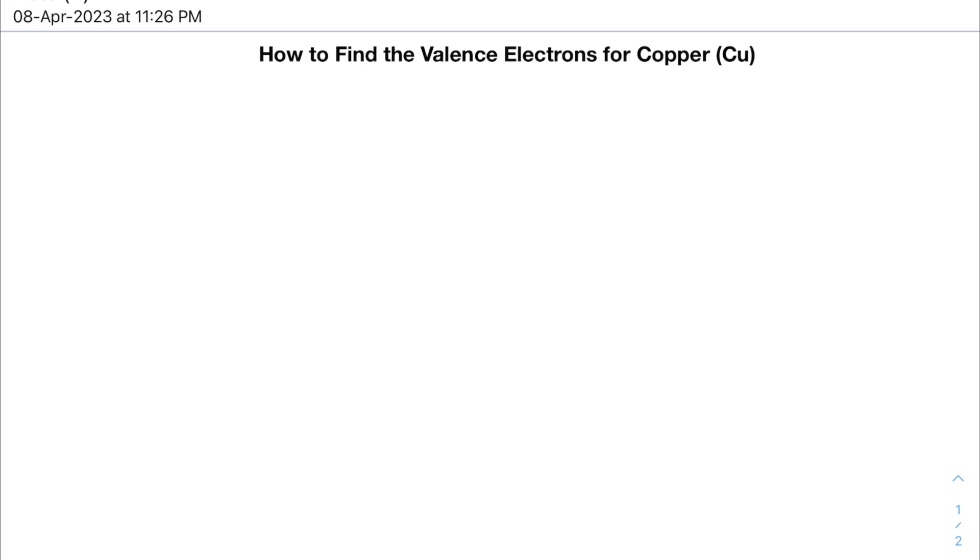Hello everyone, so in this video we are going to find out how to find valence electrons for copper. Generally, as mentioned earlier, the valence electrons are basically the group number.